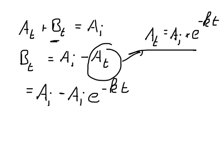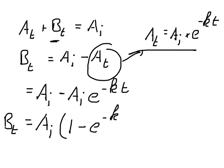Factoring out A_initial, we get: B(t) = A_initial times (1 minus e to the power of minus k times t).